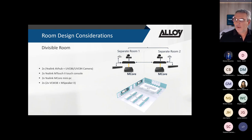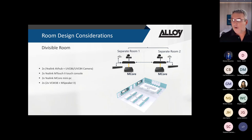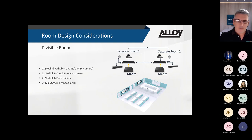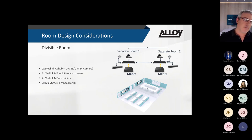As shown in the diagram, when rooms are combined, one Mcore is effectively disabled and the second system's AV Hub acts as a POE switch. The primary system then detects the camera, mics, and speakers from the second room, combining everything into a single Teams meeting room space.